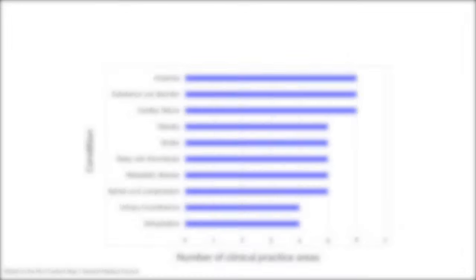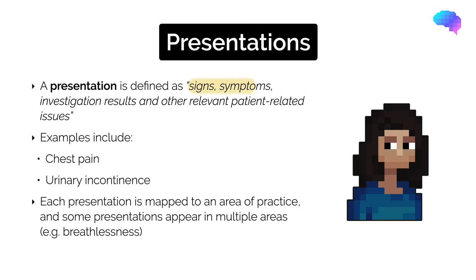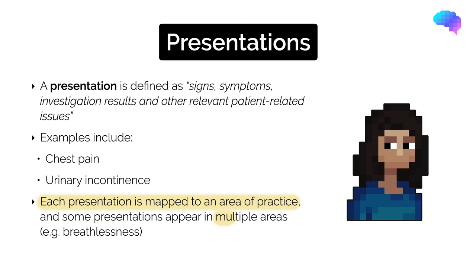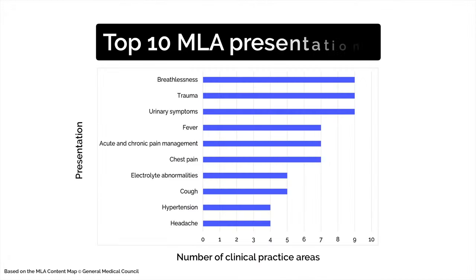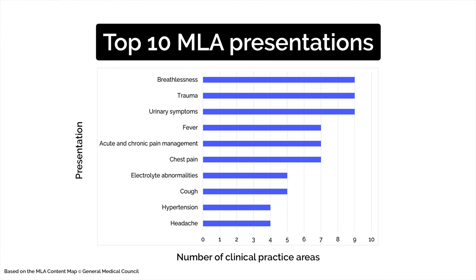A presentation is defined as signs, symptoms, investigation results, and other relevant patient-related issues — examples include chest pain and urinary incontinence. Each presentation is mapped to an area of clinical practice, and some appear in multiple areas. Looking at the most frequently occurring UK MLA presentations, breathlessness, trauma, and urinary symptoms each appear in nine areas of clinical practice. Other common presentations include chest pain, fever, and acute and chronic pain management — these are really key presentations to know when preparing for the UK MLA.